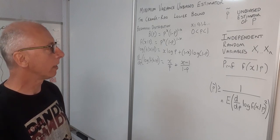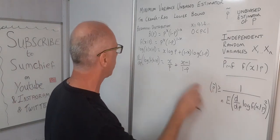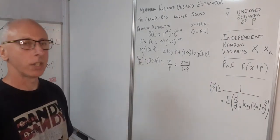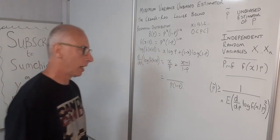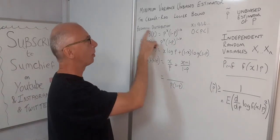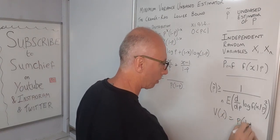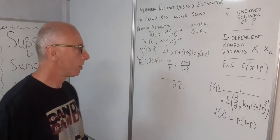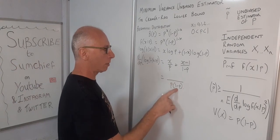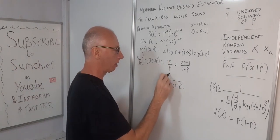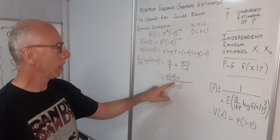Now we make this more manageable by combining into one fraction with denominator P times 1 minus P. We already know we're on the right track because for a Bernoulli distribution the variance is P times 1 minus P. To get 1 minus P in the numerator we multiply X by 1 minus P, then add P multiplied by X minus 1.